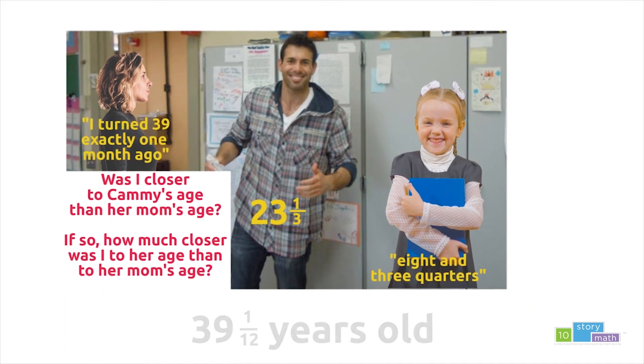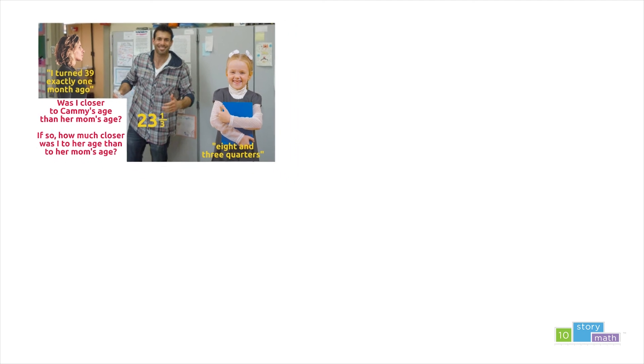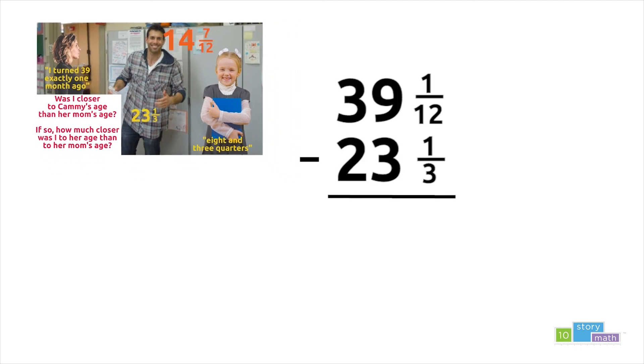To find the difference in our ages, I can subtract 23 and one third from 39 and one twelfth. Once again, our first step is to find a common denominator. Perhaps you recognized that the common denominator could be 12. Just like in the previous subtraction problem, we could create three horizontal cuts that result in 12 equal parts. Four twelfths is a nickname of one third.